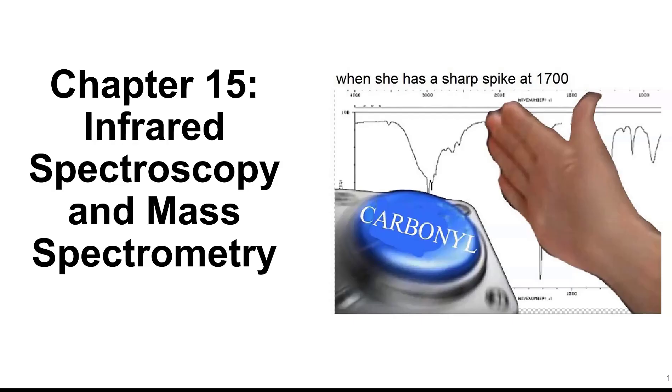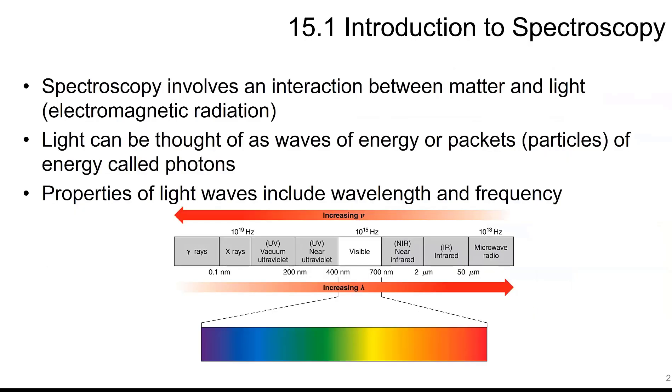In Chapter 15, we'll be looking at infrared spectroscopy and mass spectrometry. An introduction to spectroscopy, that is a technique that involves an interaction between matter and light, specifically electromagnetic radiation.